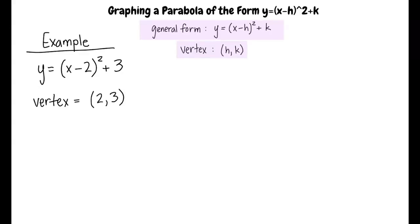Wait, why isn't the vertex negative 2, 3? Good question. This is because the general form states x minus h. This means that when h is subtracted from x, h is positive.